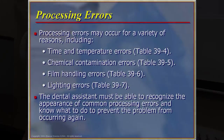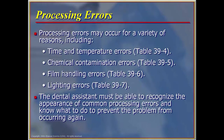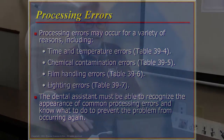Processing errors may occur for a variety of reasons. Time and temperature is the primary processing error. Chemical contamination occurs when the developer and fixer are not kept separately. Film holding errors and lighting errors can also occur. All of these need to be correctly handled so that the end result is a film that is radiographically diagnostic for the doctor.